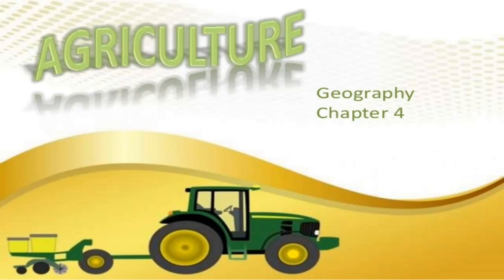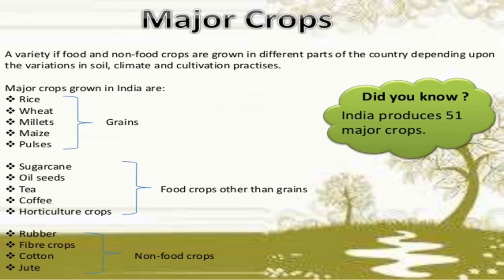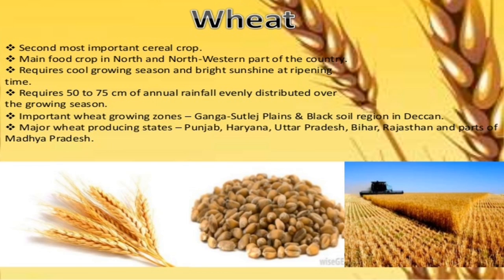Hello, good morning students. Today we will discuss the next part of the chapter Agriculture. As we were discussing about the major crops, in that sequence we are going to discuss about the second major crop, wheat. Wheat is the second most important cereal crop and the main food crop in the north and northwestern part of the country. It requires a cool growing season and bright sunshine at ripening time.